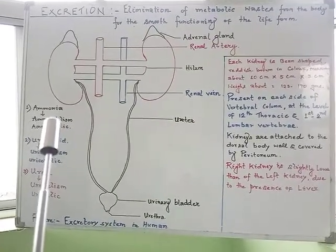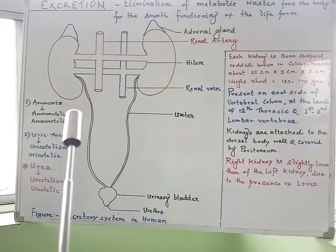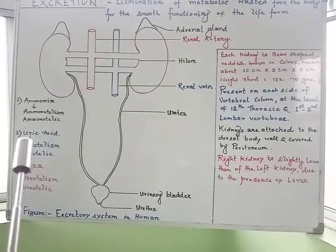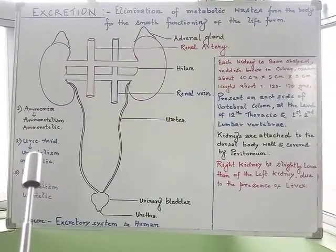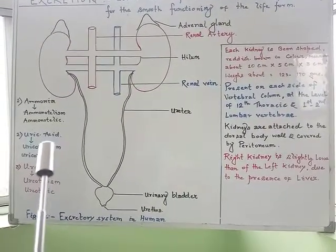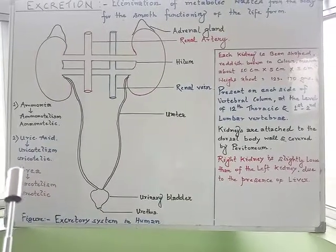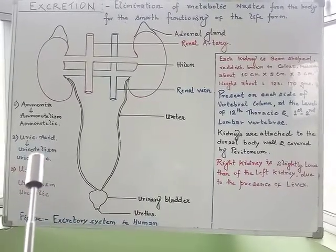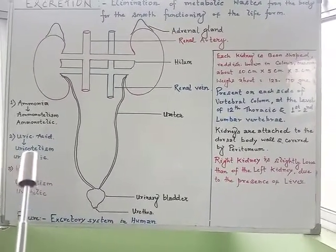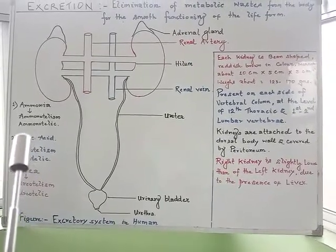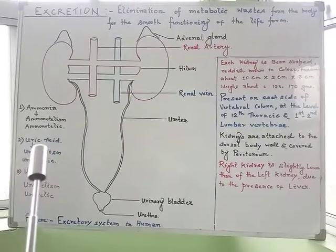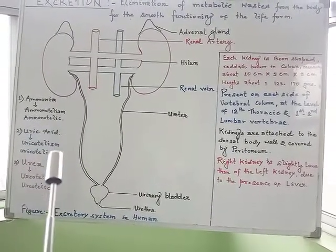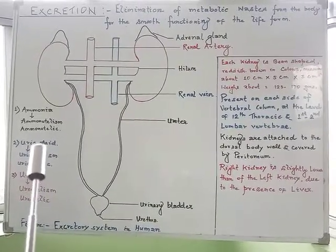Certain groups of animals release their nitrogenous waste products in the form of uric acid. The mode of excretion is known as uricotelism and the animals are called uricotelic animals — for example, insects, birds, and land reptiles. As uric acid is less toxic compared to ammonia, its removal requires very less amount of water for elimination from the body.